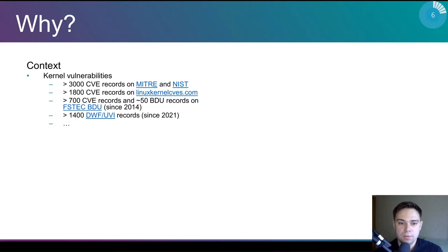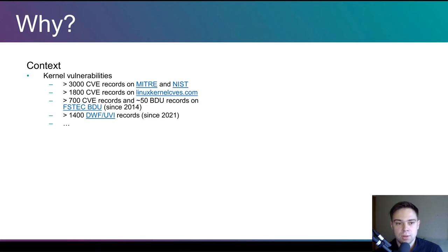Let's talk a bit about why, in my opinion, we need to automate these checks and why the automation is not so simple. I'm pretty sure you already know these facts, but I would like to explicitly mention them once again in my motivation part to give you a better understanding of why the tool works this way. Some automation is highly desirable because we have thousands of CVEs assigned to the Linux kernel — most of them in recent years. Records are in different databases, and many databases are somehow synchronized with each other.